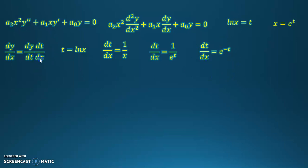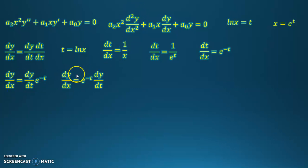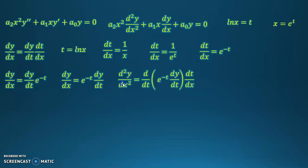Now we have an expression to substitute in. The derivative of y with respect to x equals the derivative of y with respect to t times e to the negative t. We also need a substitution for the second derivative, so we need to differentiate one more time. Finding the second derivative of y with respect to x, we need to apply the chain rule again: we take the derivative with respect to t of the first expression we calculated, times the derivative of t with respect to x.